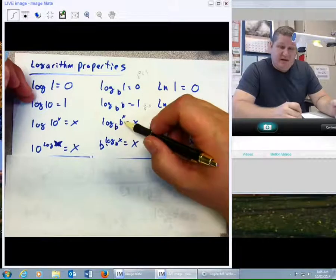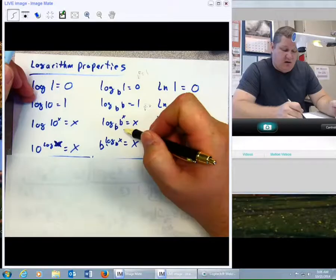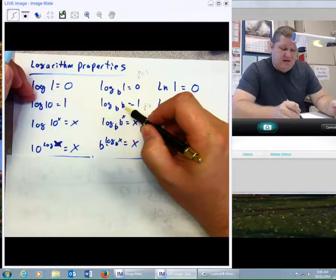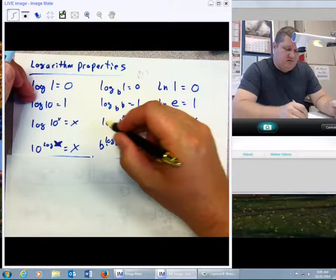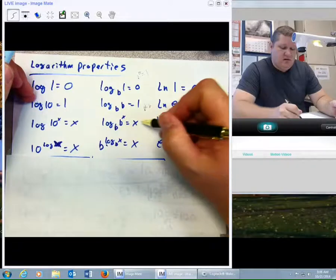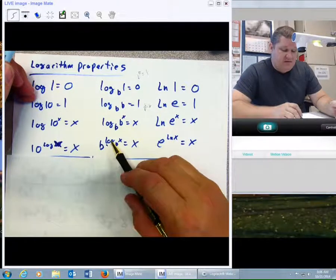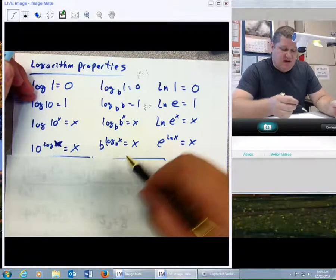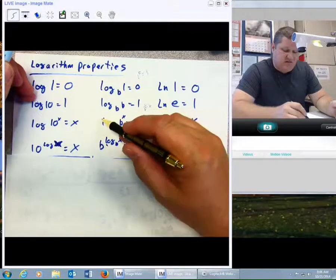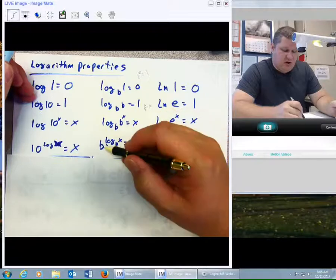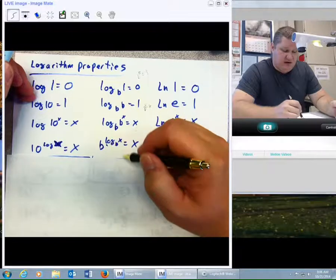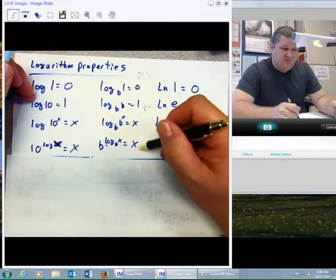Log base b of b to the x, if log base b of b is 1, these two are basically going to cancel, leaving just the x. If you have b raised to the log b of x, again, just like these cancel, log base b of b, they're gone, b raised to the log b are going to cancel, and you're left with x.